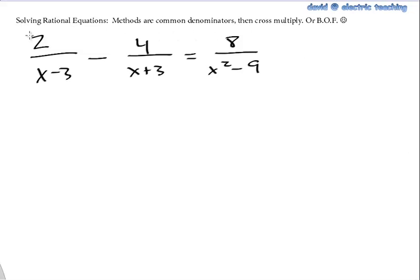David from Electric Teaching here. I'm going to try to show you how to solve rational equations. If it's a rational equation, it must mean we have a variable in the denominator. That's what it means to be rational equations or rational expressions. Variables in the denominator.